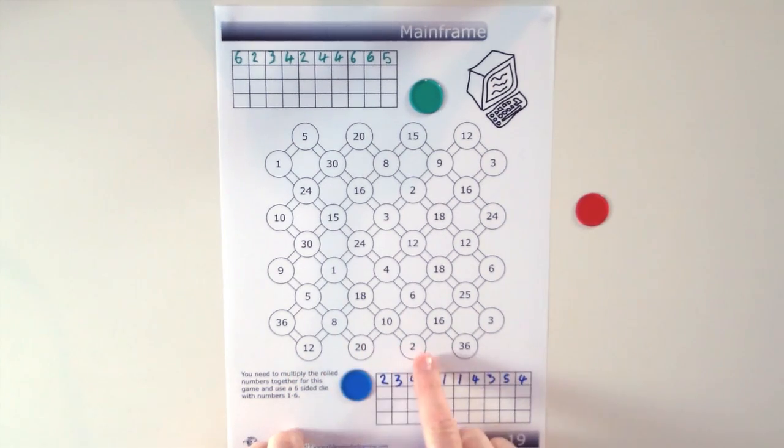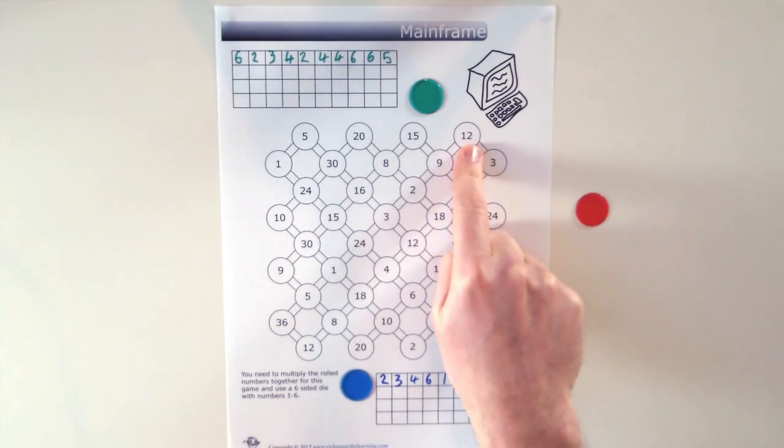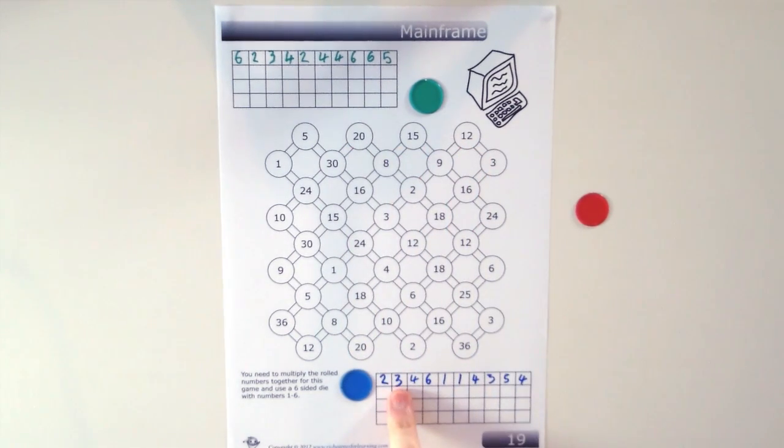So blue has 12, 20, 2 and 36. Green has 5, 20, 15 and 12. And blue can times 3 by 4 to make 12. So they are going to cross those out because they have just multiplied them together and they move on the 12 circle.